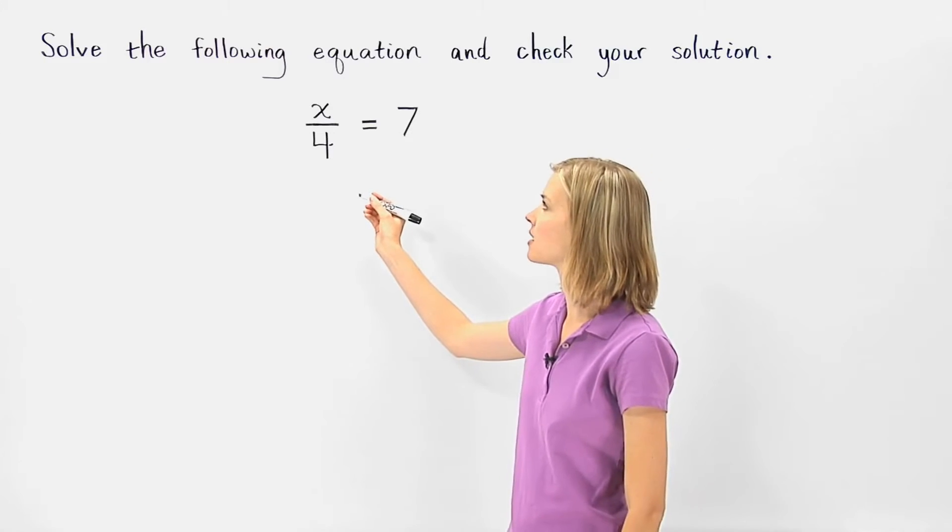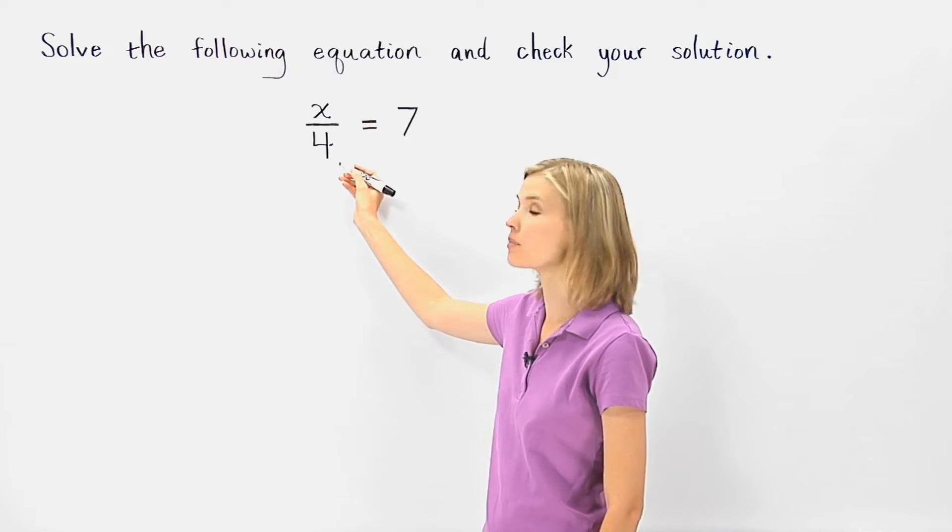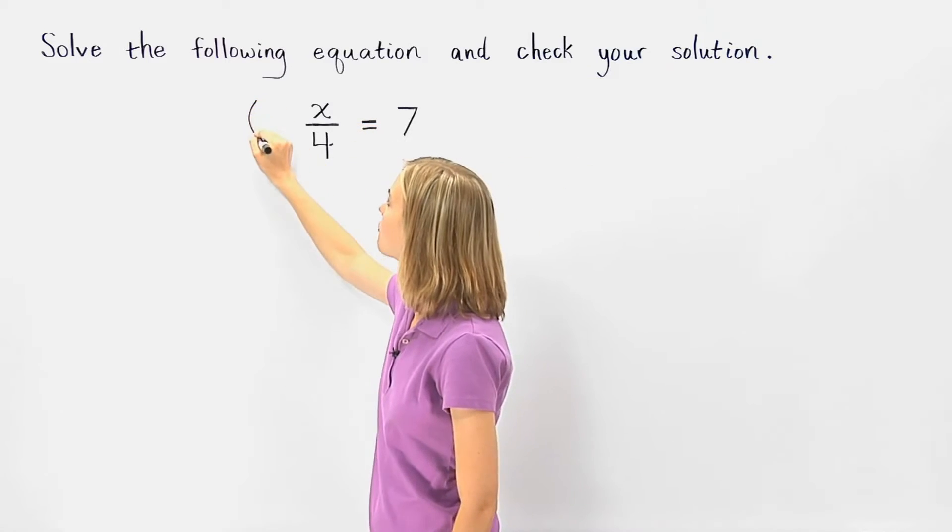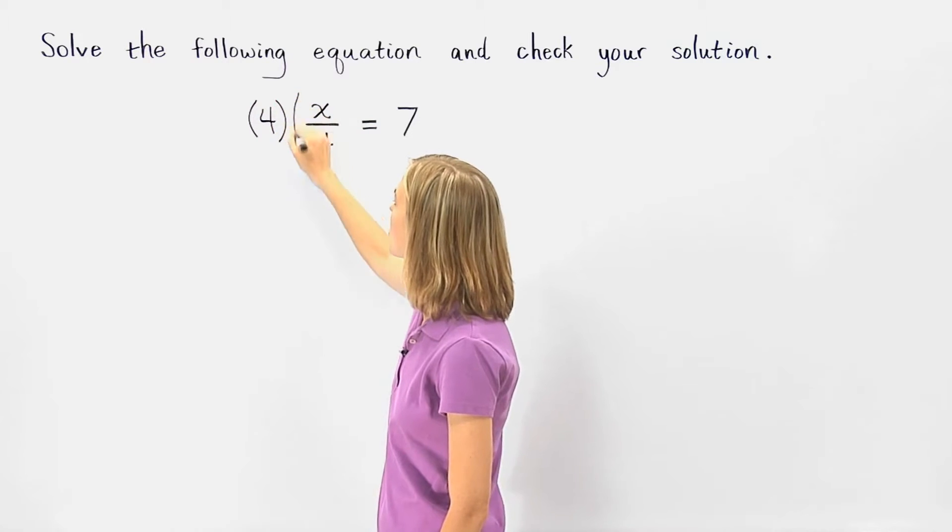To solve this equation, since x is being divided by 4, in order to get x by itself, we need to multiply by 4 on both sides of the equation.